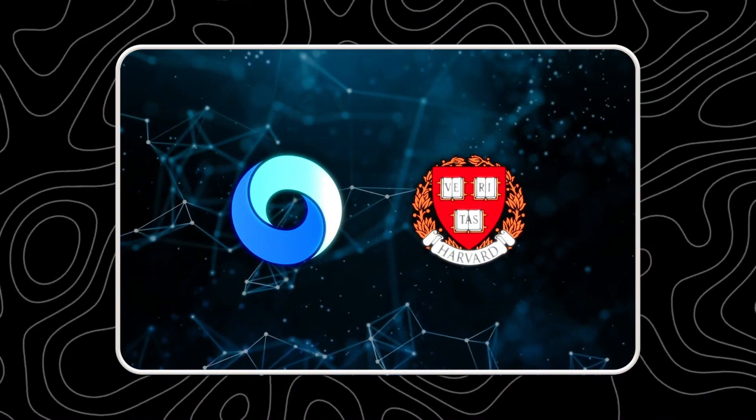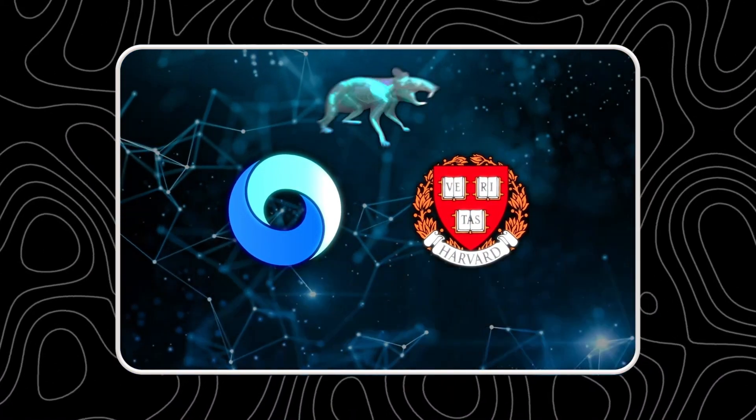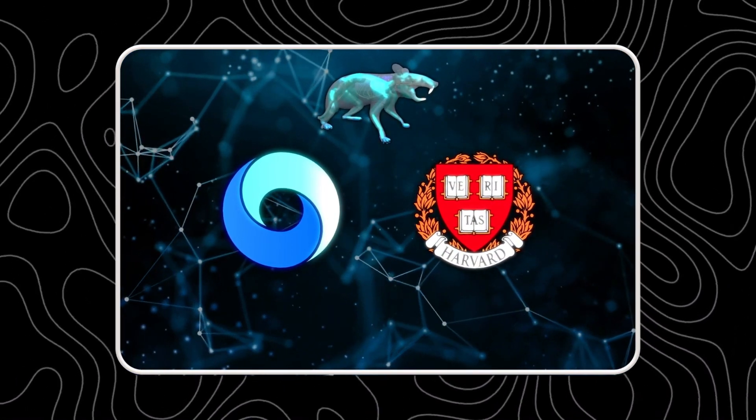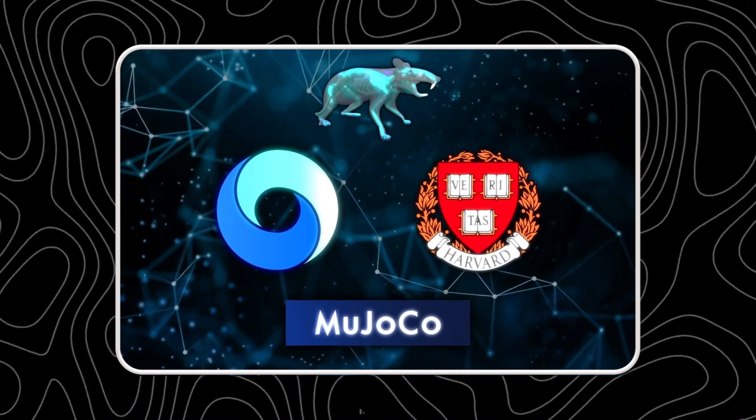So, you might be wondering, how did Google DeepMind and Harvard create this amazing artificial brain? Well, it was not easy. It involved a lot of data, a lot of computing power, and a lot of creativity.